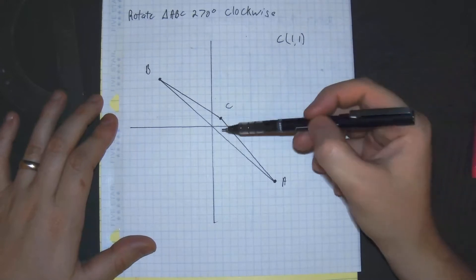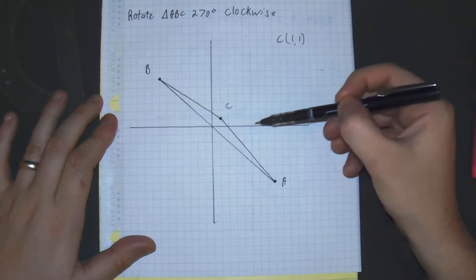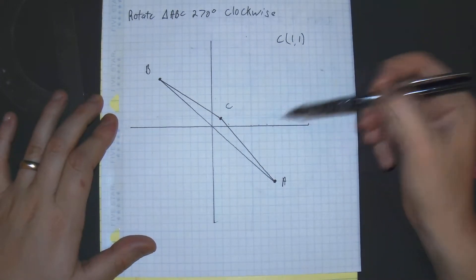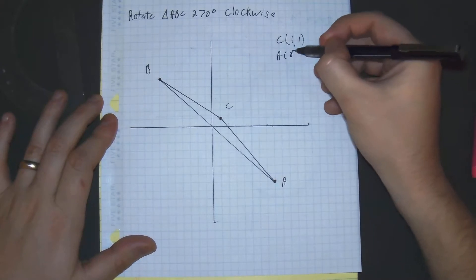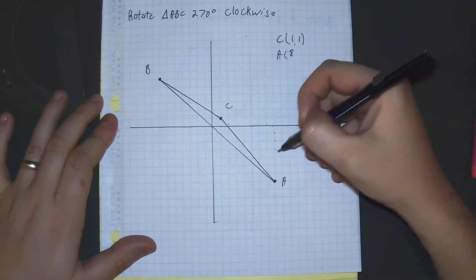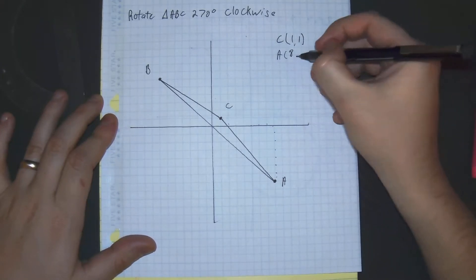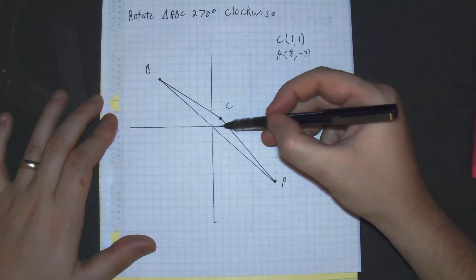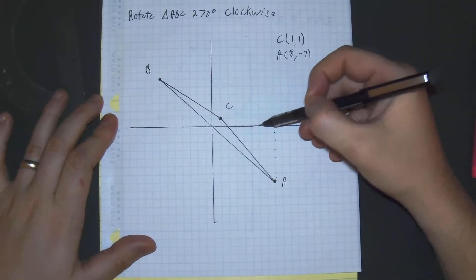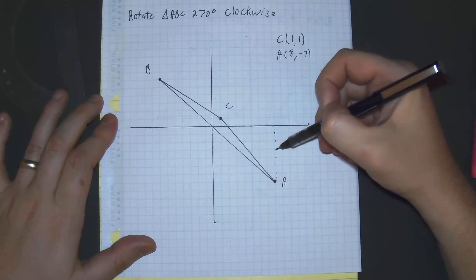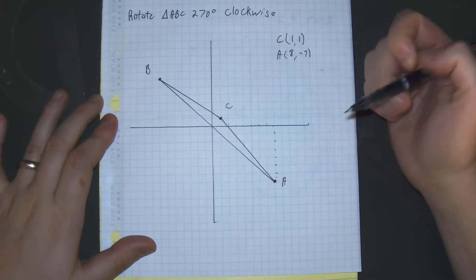A, let's find where that's at. Counting: 1, 2, 3, 4, 5, 6, 7, 8. So A is at 8. And then 1, 2, 3, 4, 5, 6, 7, negative 7. Counting again: 1, 2, 3, 4, 5, 6, 7, 8, and 1, 2, 3, 4, 5, 6, 7. Perfect.